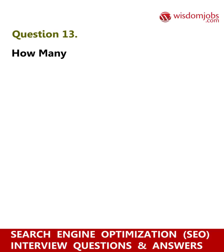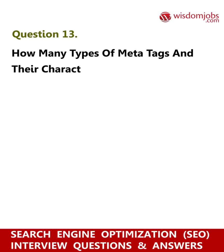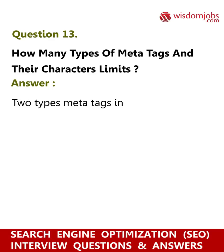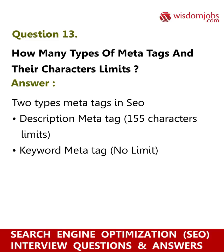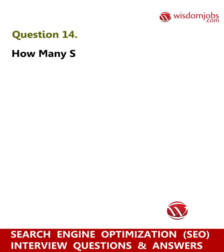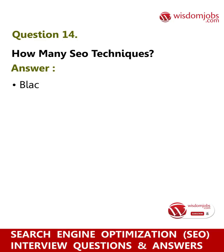Question 13: How many types of meta tags are there and what are their character limits? Answer: There are two types of meta tags in SEO — description meta tag with a 155 character limit, and keyword meta tag with no limit. Question 14: How many SEO techniques are there? Answer: Black hat SEO, white hat SEO, and gray hat SEO.